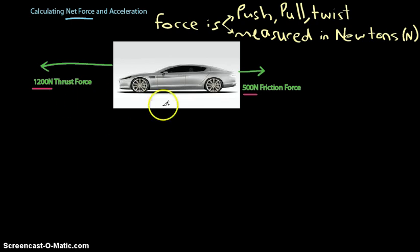Now the net force is the difference between these two forces, so the difference between 1200 and 500. If these two forces had been the same, so if this for example had been 1200, there would be no difference between the forces and the overall net force would be 0, but that's not the case.